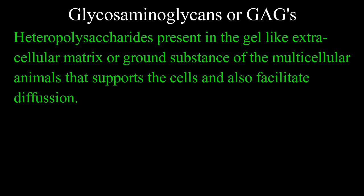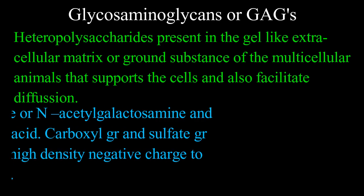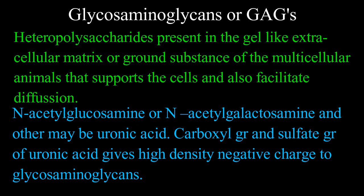Glycosaminoglycans are heteropolysaccharides present in the gel-like extracellular matrix or ground substances of multicellular animals that support the cells and also facilitate diffusion. Glycosaminoglycans consist of repeating disaccharide units, among which one monosaccharide is always either N-acetylglucosamine or N-acetylgalactosamine, and the other may be uronic acid. The carboxyl group and sulfate group of uronic acid give high-density negative charge to glycosaminoglycans.